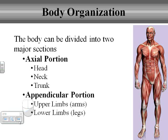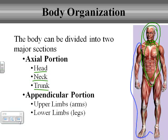The first thing is that you can really separate the human body into two specific portions. You can talk about the axial portion, which consists of the head, neck, and trunk. Then you have the appendicular portion, which is everything outside of the head, neck, and trunk — obviously your limbs, your arms, and your legs. We can talk about the body in reference to organs and body parts that exist in the axial portion versus the appendicular portion.